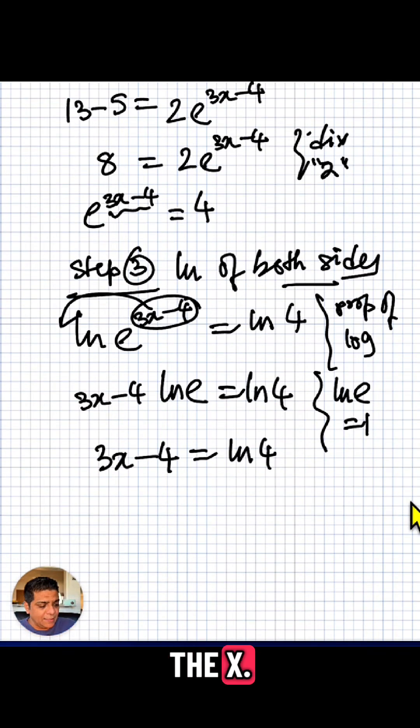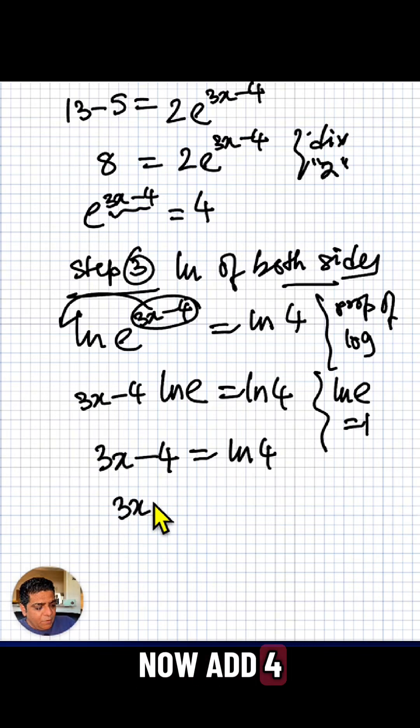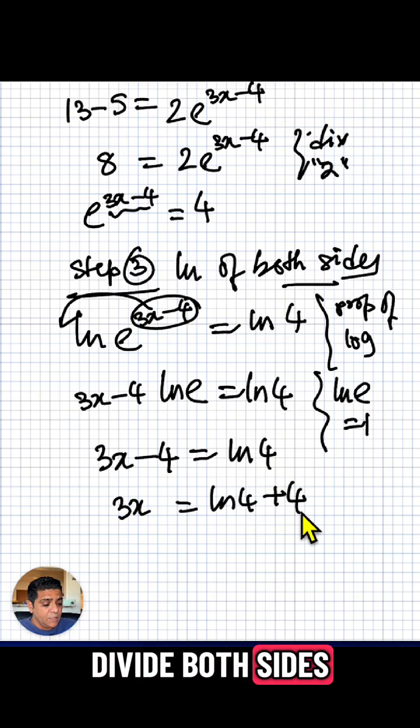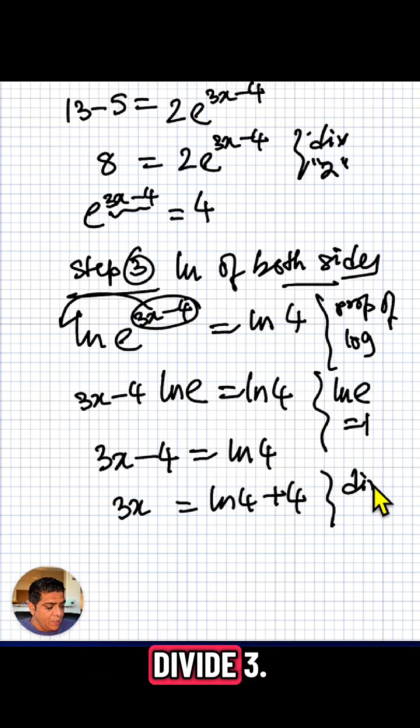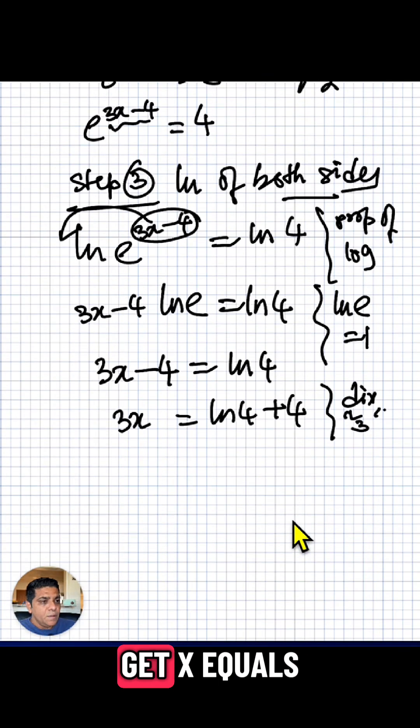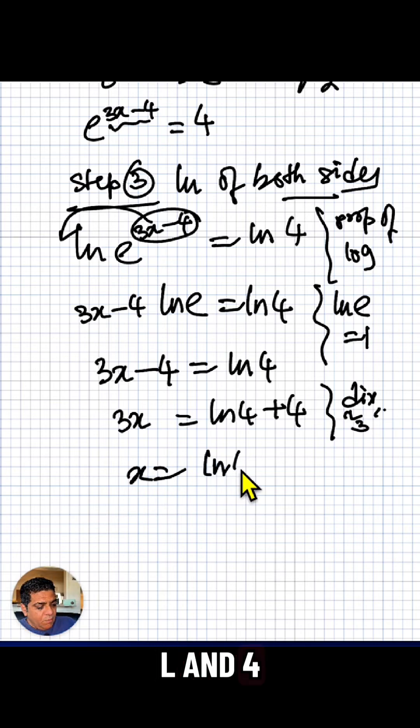Now simply all we have to do is isolate the x. So 3x, now add 4 on both sides, equals ln 4 plus 4. Divide both sides by 3. So we get x equals ln 4 plus 4 divided by 3.